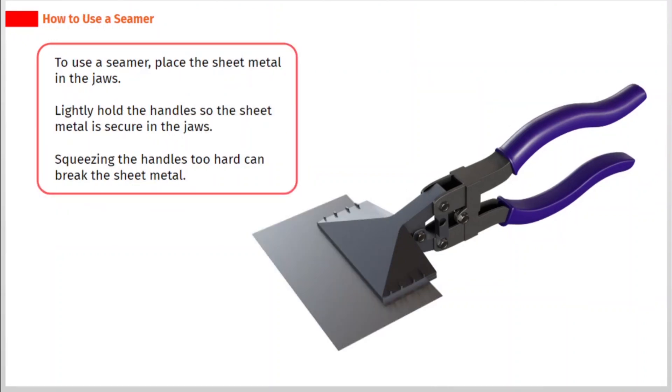To use a seamer, place the sheet metal in the jaws. Lightly hold the handle so the sheet metal is secure in the jaws. Squeezing the handles too hard can break the sheet metal.